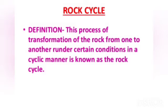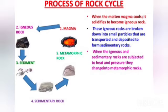What is a rock cycle? This process of transformation of rock from one type to another under certain conditions in a cyclic manner is known as the rock cycle. When molten magma cools, it solidifies to become igneous rocks. These igneous rocks are broken into small particles to form sedimentary rocks. When these igneous and sedimentary rocks are subjected to heat and pressure, they change into metamorphic rocks.